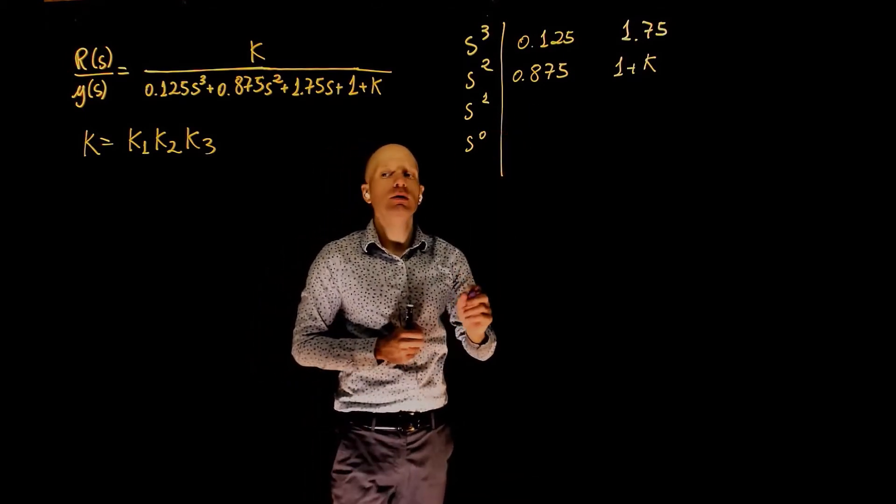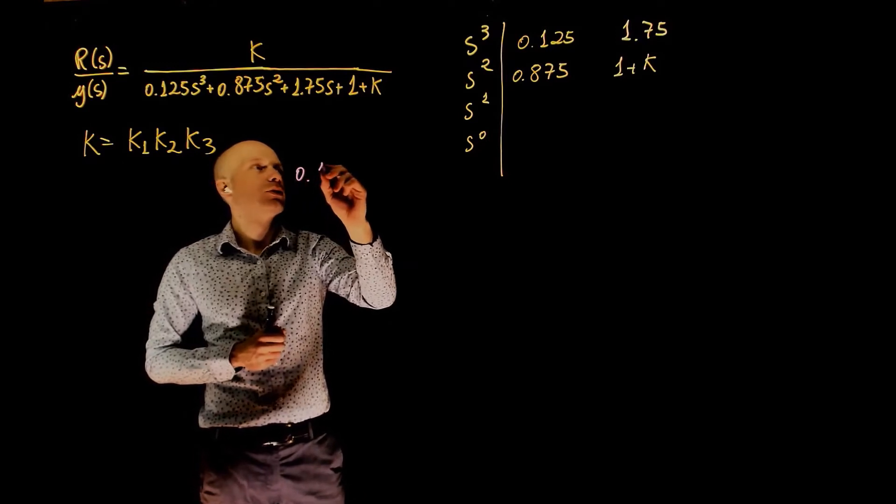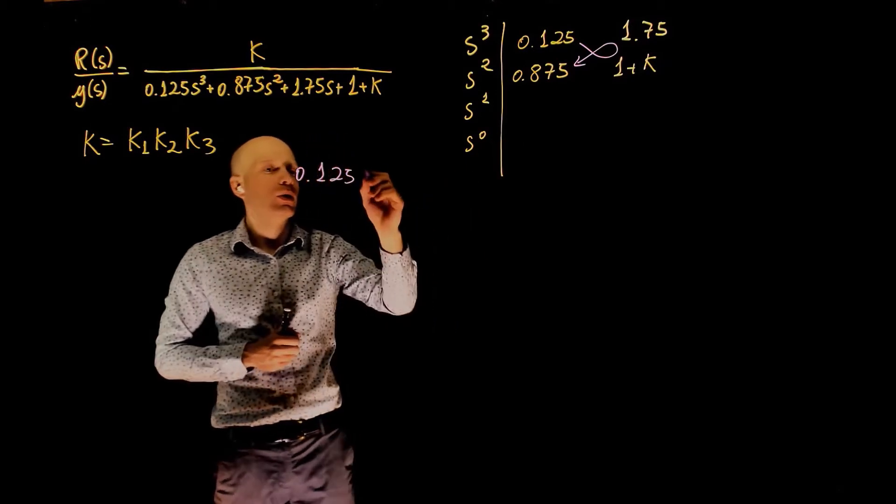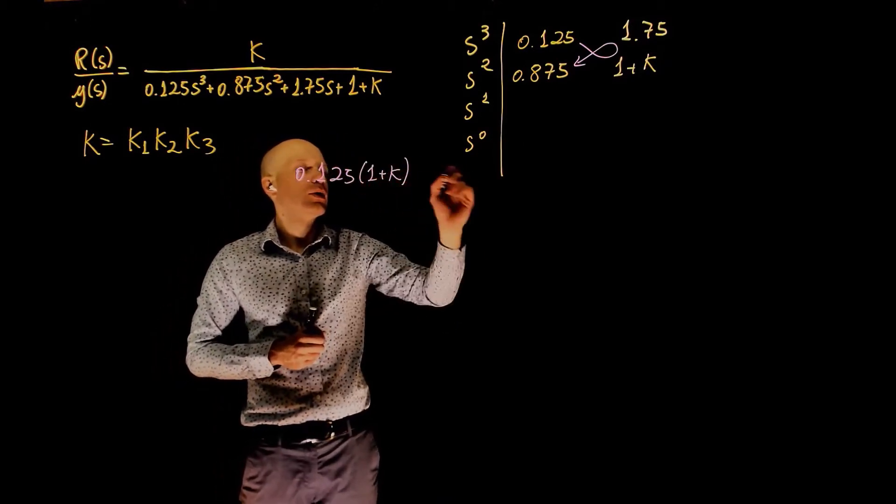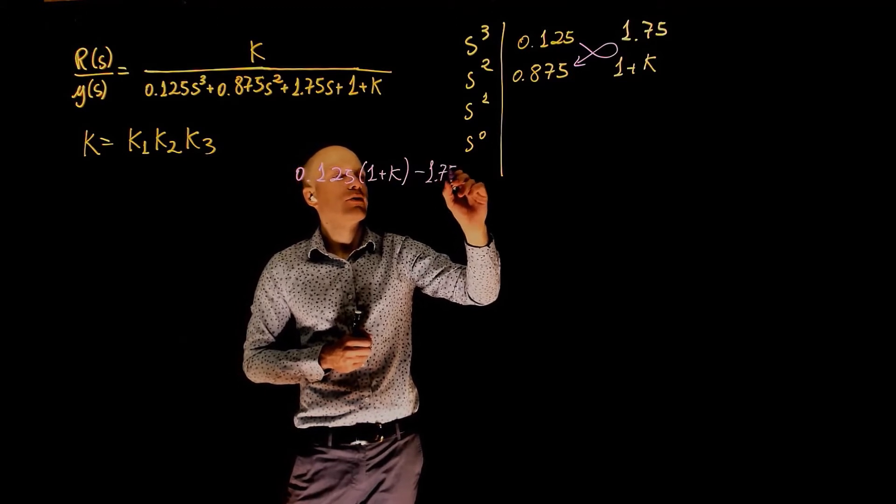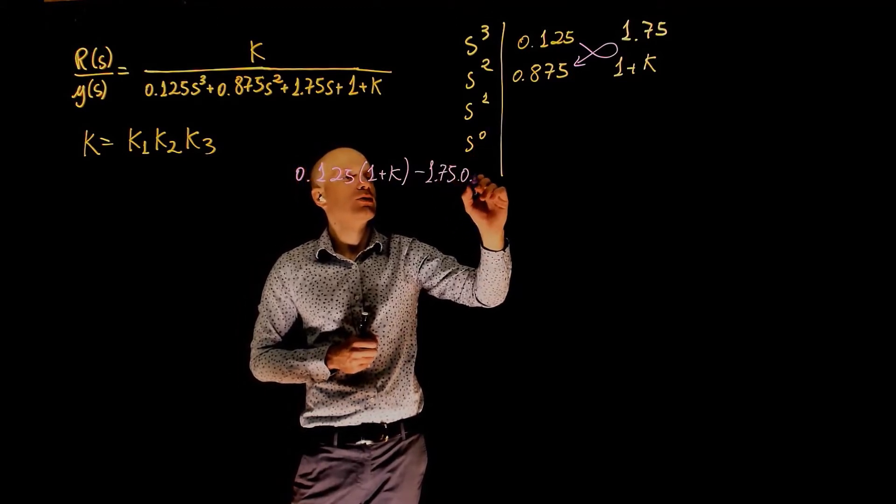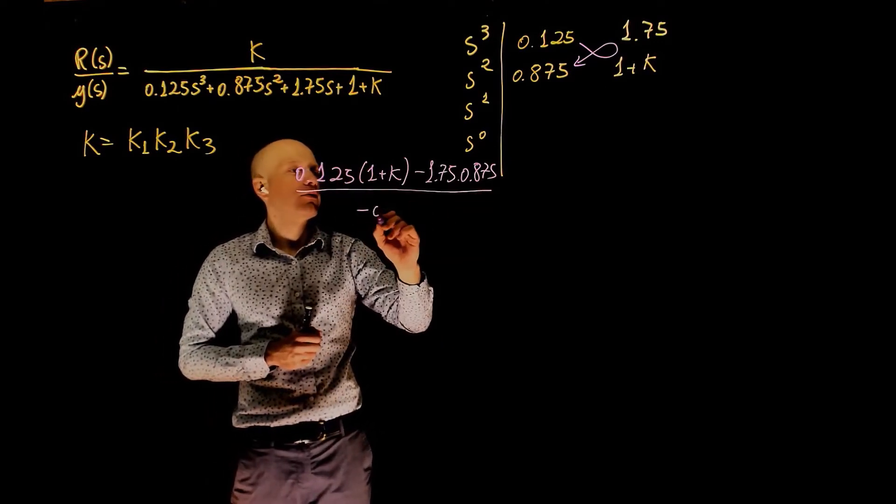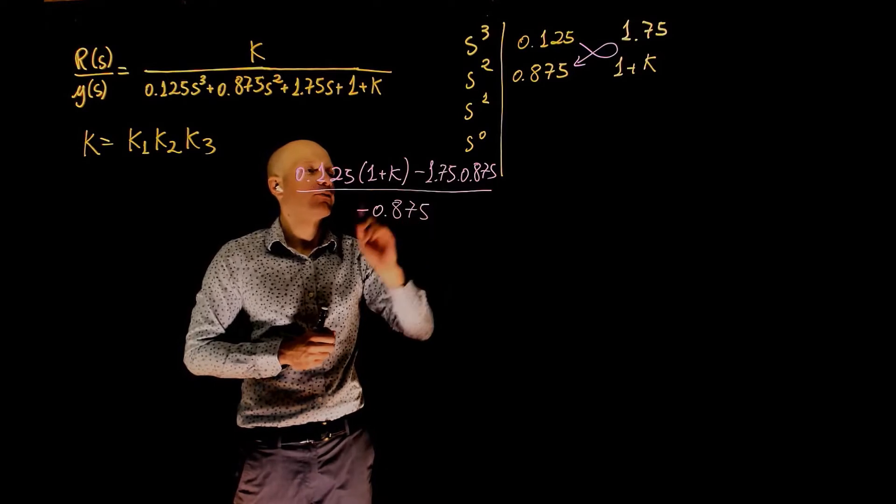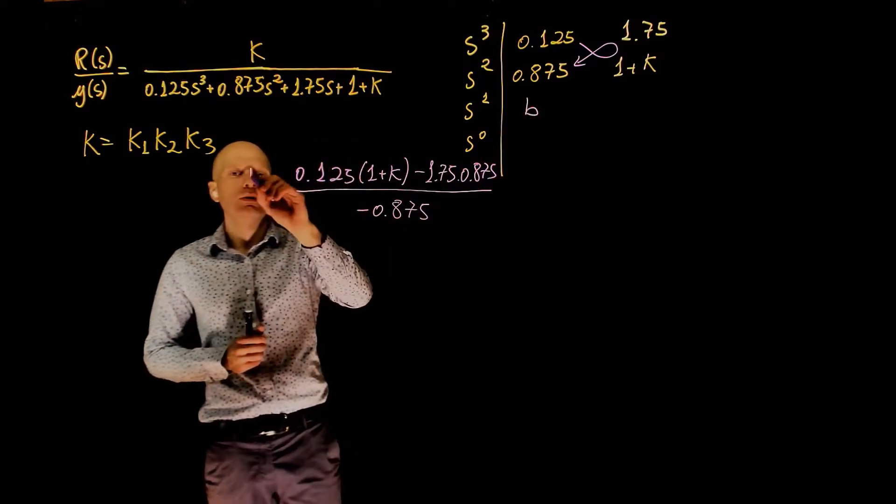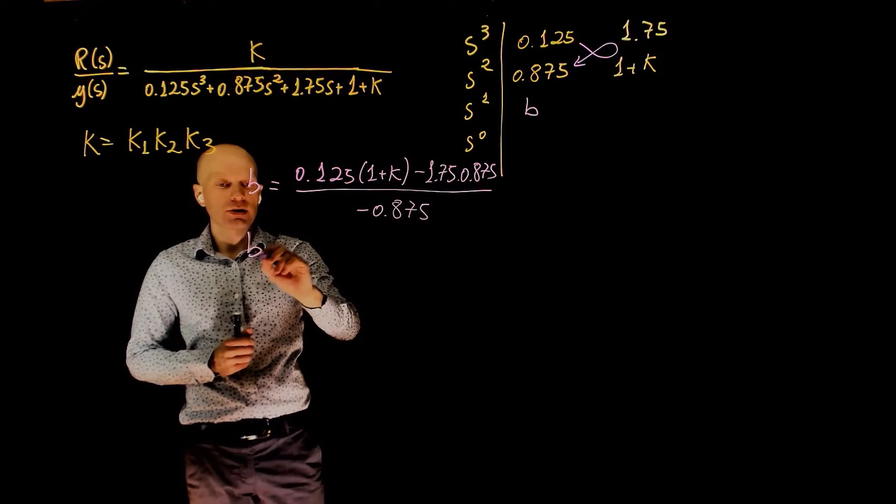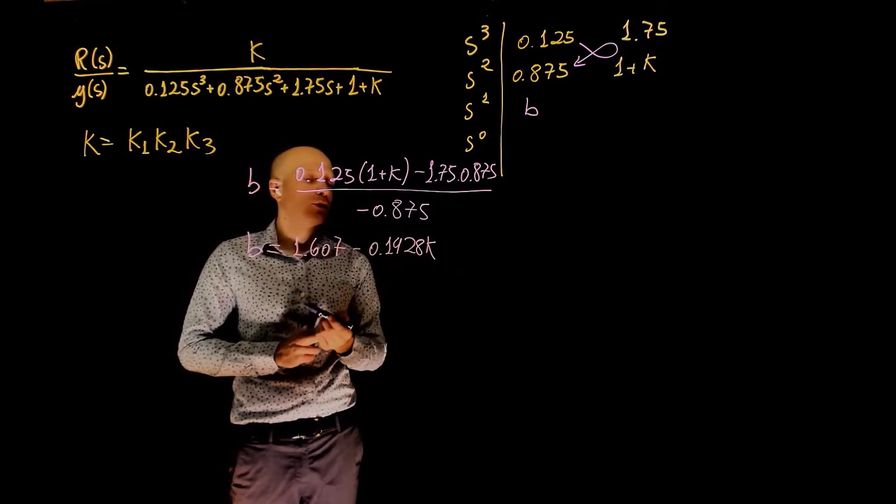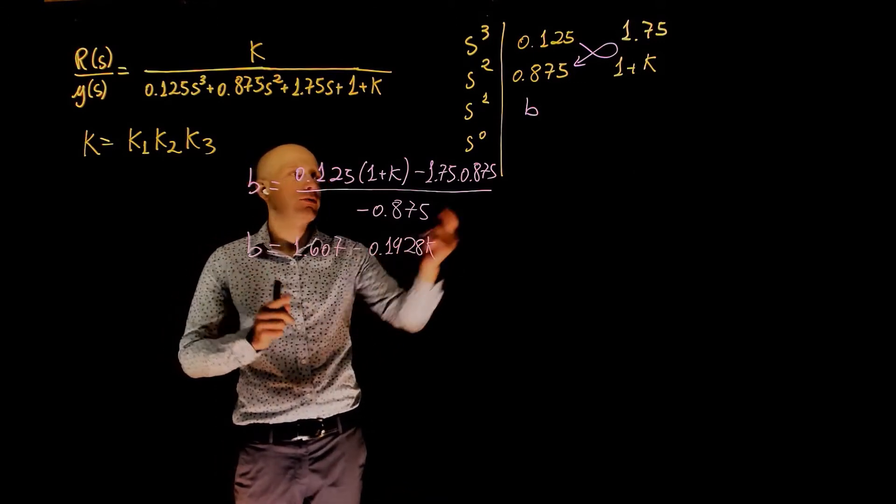Now we can complete the array. Let's start with this first cell. This cell is 0.125 times 1 plus k minus 1.75 times 0.875, all divided by negative 0.875. Let's call this element here b, is the value of b, and this can be simplified to this expression 1.607 minus 0.1428 k. This is the value of b, this is this cell.